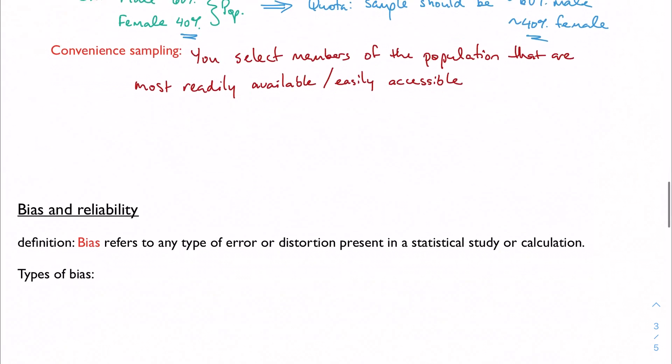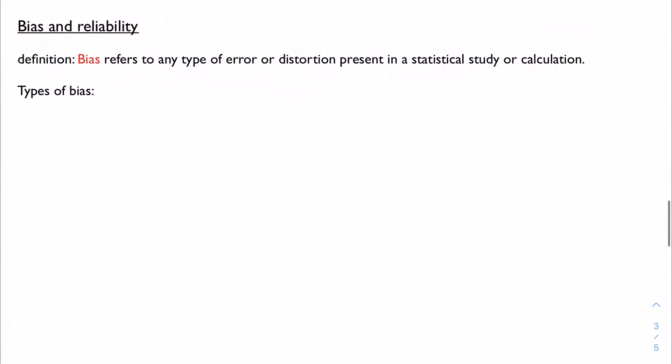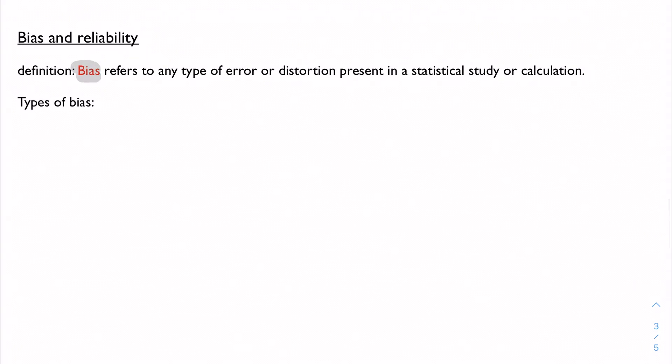And the problems that those run into, or that we can run into, are called bias. So bias is going to be any type of error or distortion present in some kind of a statistical study or calculation. The purpose of creating a sample is to create a faithful and accurate representation of the population, right? That just kind of goes without saying. A sample should be an accurate representation of the population. So how do I make sure that happens? And how do I notice when it's not an accurate sample or representation of the population?